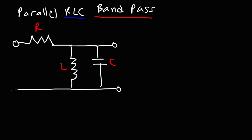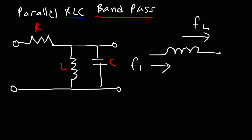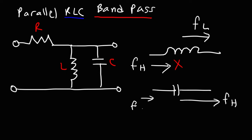Before we discuss this circuit, there are some things to keep in mind. When you have an inductor, inductors allow low-level frequencies to pass through without much impedance. However, high-level frequencies — inductors offer a lot of impedance to them. So inductors can block high-level frequencies but allow low-level frequencies to pass. Next, we have a capacitor. Capacitors allow high-level frequencies to pass through, but they block low-level frequencies.